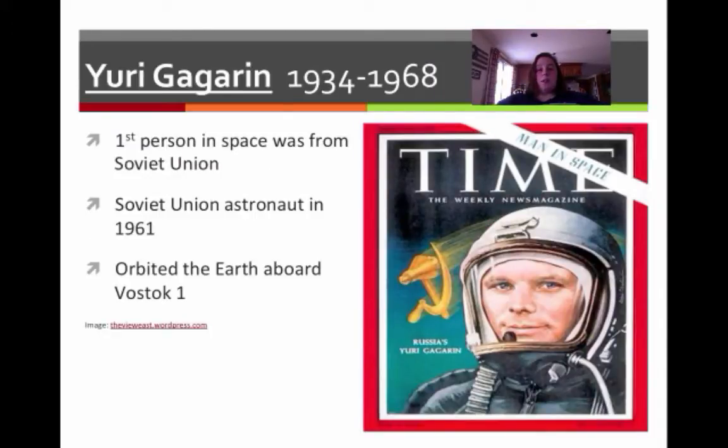So who was the first person into space? Well, it wasn't from the United States. It was from the Soviet Union. It was a guy named Yuri Gagarin, and I've got his birth and death dates up there. He was from the Soviet Union, and he orbited the Earth, so it just means he went around the Earth once in a ship called Vostok 1, and this is a picture of him in Time magazine.